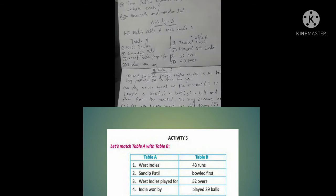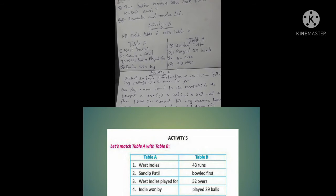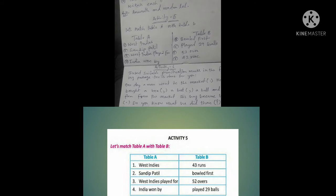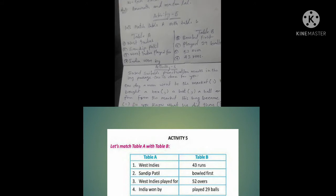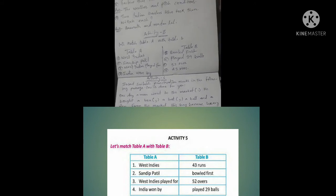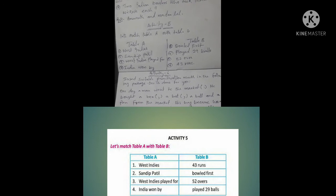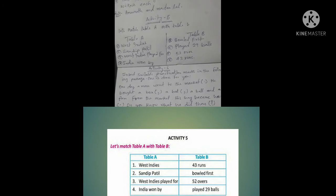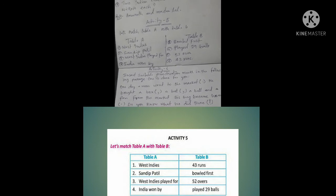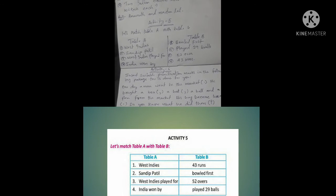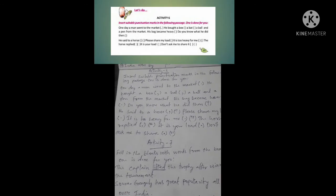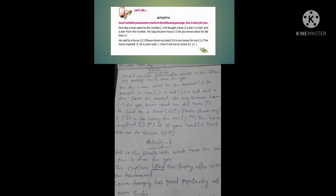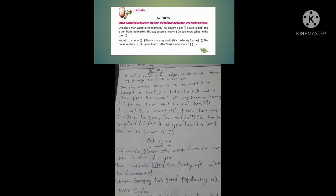Activity 6: Insert suitable punctuation marks in the following passage. One is done for you. One day a man went to the market. He bought a box, a bat, a ball, and a pen from the market.